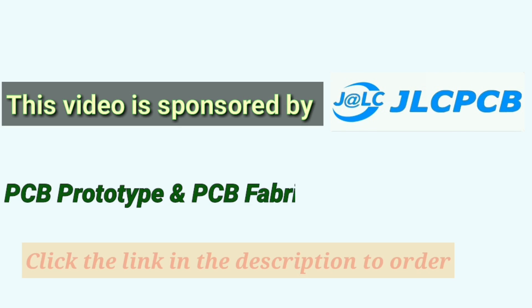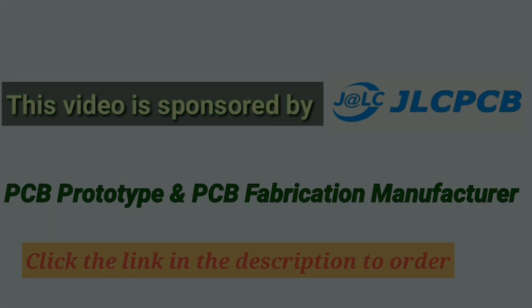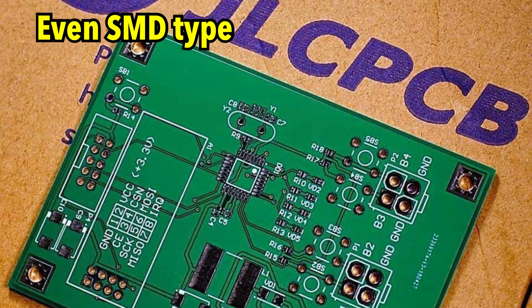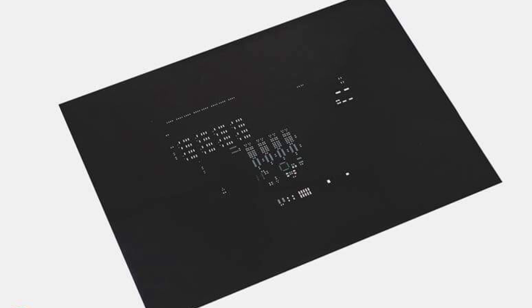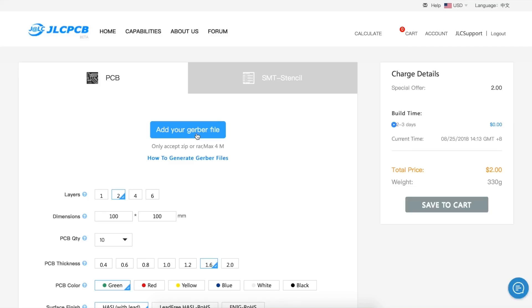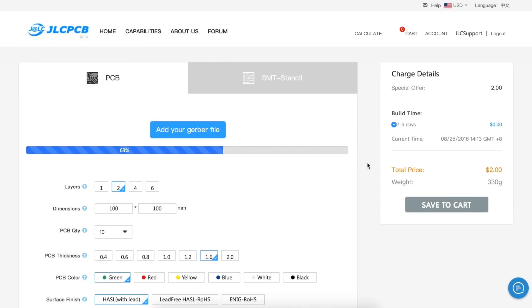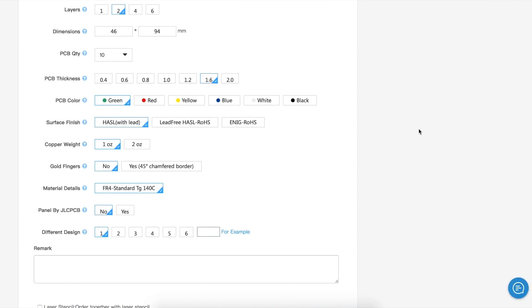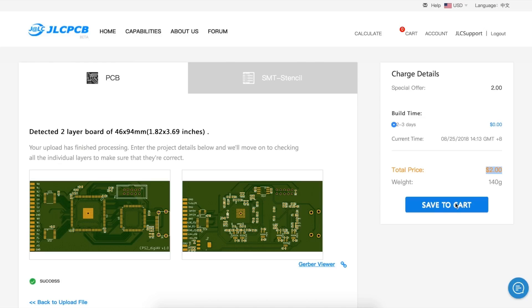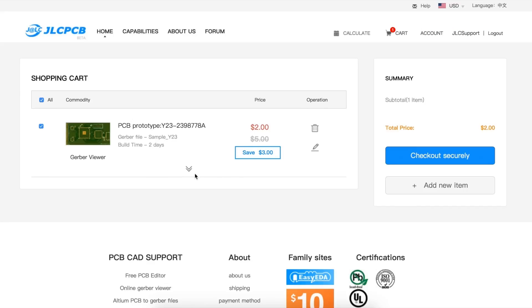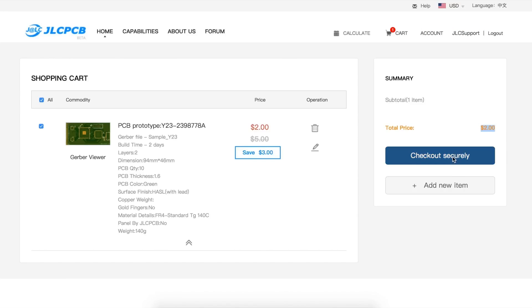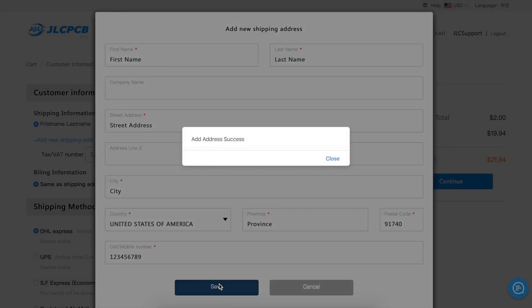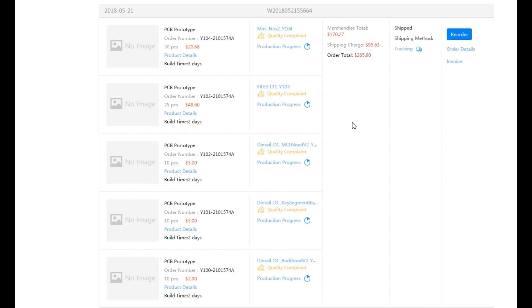This video is sponsored by JLCPCB, the largest PCB prototype and PCB fabrication manufacturer in China. At their official website, upload your Gerber file, select your PCB size, PCB layer, PCB color, and click checkout. Add your address, you have to pay only $2 for 10 PCBs, and you are done.